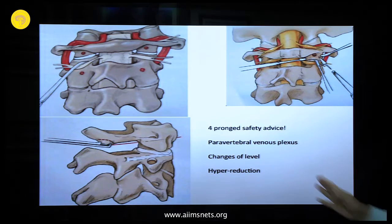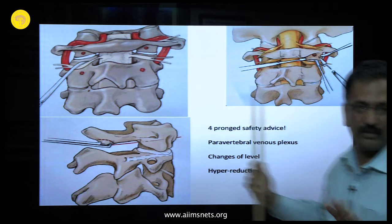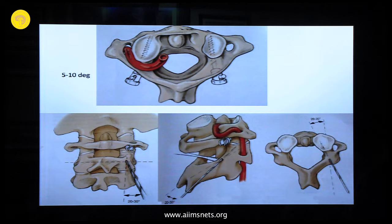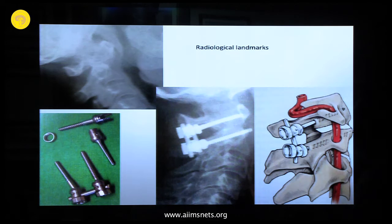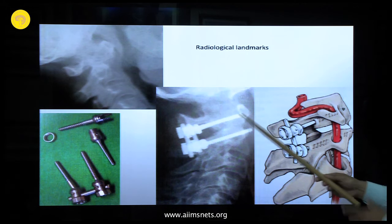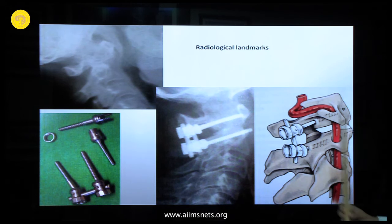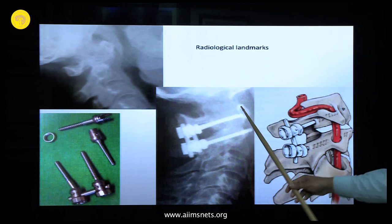This is not difficult at all — just ensure you don't go lateral to the joint edge. The screw trajectory is 5-10 degrees medially and 20-30 degrees upward. Go as far as you can — bicortical purchase is fine at C1. At C2 you can go 22-24 mm anteriorly. Even 16-18 mm provides good purchase.